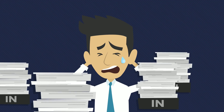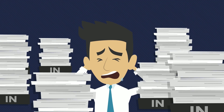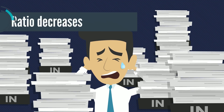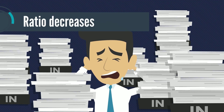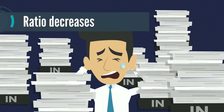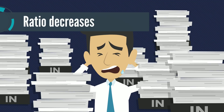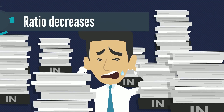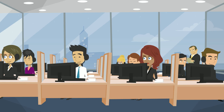Alternatively, if the ratio decreases, this could mean that they are in bad financial shape. A lower ratio indicates that a company is paying suppliers more slowly. A change in ratio could also mean that payment terms with a supplier have changed.